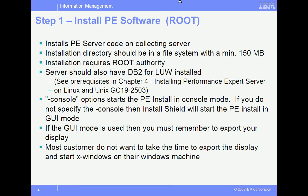We start with Step 1: install the PE Server software. You will need true root access to do the server installation. You are going to be installing PE Server on the collecting server. The installation directory should be a file system with a minimum of 150 megabytes. The server should also have DB2 for LUW installed. We recommend using the dash-console option, which starts the PE install in console mode. If you do not specify this, it will bring up the install shield in graphical user interface mode.